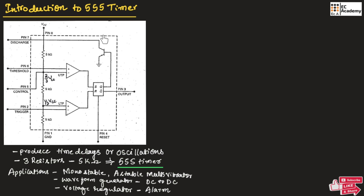If you observe the 555 timer, this is the internal block diagram of the 555 timer, available in the form of an IC having 8 pins. The 555 timer majorly consists of 3 resistors, 2 comparators, and 1 SR flip-flop.